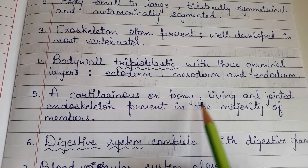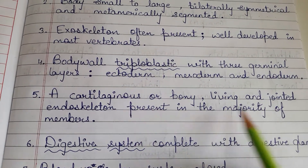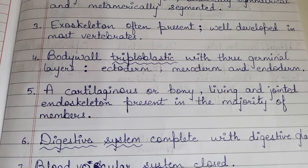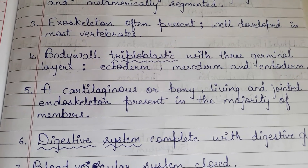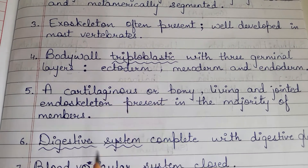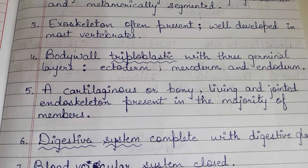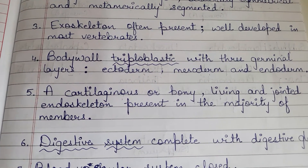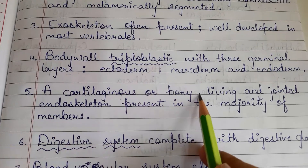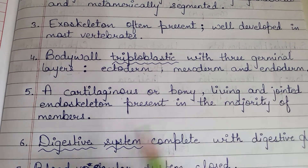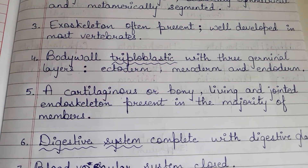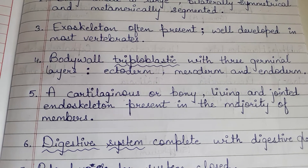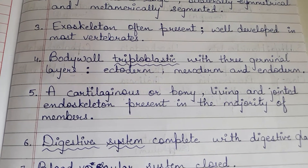Fifth point: a cartilaginous or bony, living or jointed endoskeleton is present in most members of Chordata. You may have heard of cartilaginous fishes and bony fishes — both belong to Chordata. The endoskeleton can be cartilaginous, bony, or jointed. Jointed endoskeleton is associated with jointed appendages, as seen in insects and similar organisms.